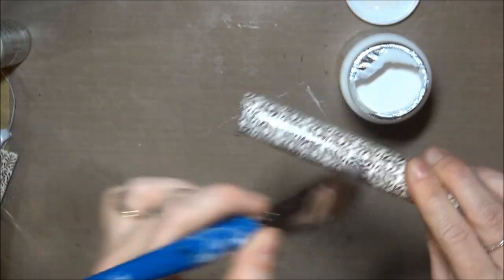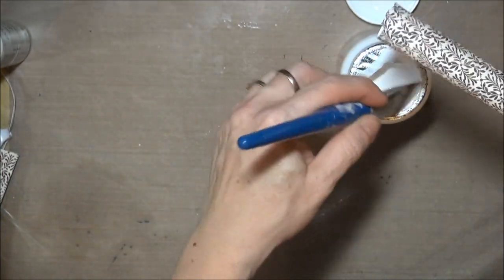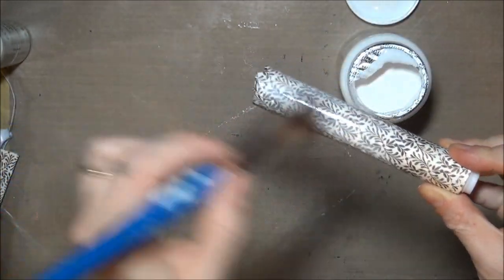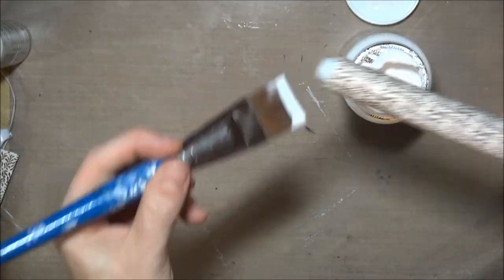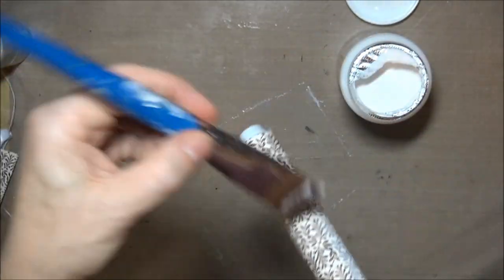When it's all adhered evenly, you can put a coat of Mod Podge over the whole surface to help seal it in and also give it a nice shine. When that's dry, you can add more coats until you have the look that you want.